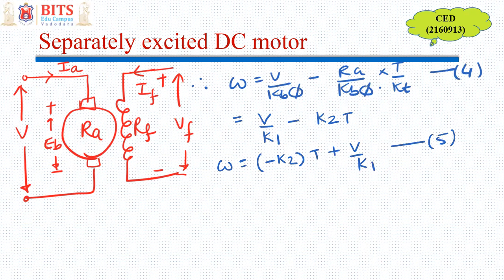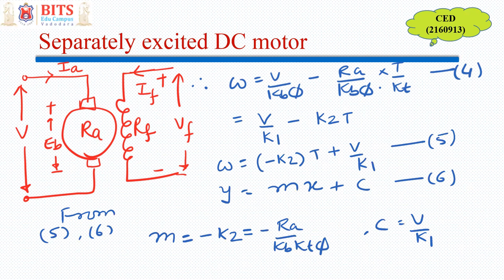I can rewrite this equation to match the straight line equation: ω = -K2·T + V/K1, which is similar to Y = MX + C, where M is the slope and C is the intercept with the Y-axis. When X equals zero, the value of Y is given by C. In short, the characteristics of a separately excited DC motor is mathematically a straight line with negative slope, which is -RA/(Kb·KT·φ).